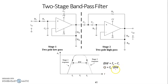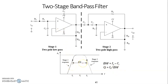If the quality factor is less than 10, it indicates that the bandwidth is very large and such a filter is referred to as a wide bandpass filter. If the quality factor is equal to or greater than 10, the bandwidth is very small and the filter is then referred to as a narrow bandpass filter.